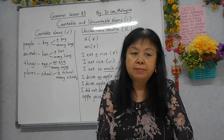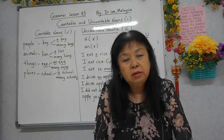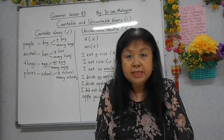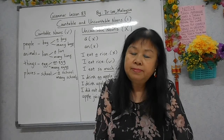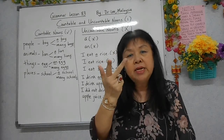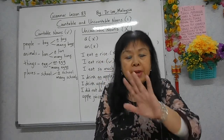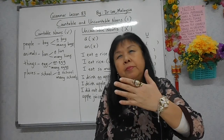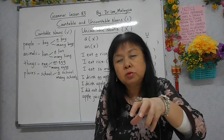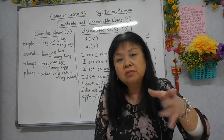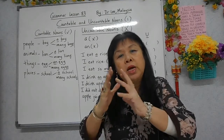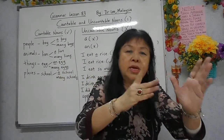Saya memilih bab ini sebab sebelum ini, saya telah mengulangkaji artikel dan pada masa itu, saya telah sebut Countable Nouns. Sebab itu, bab ini saya akan mengajar Countable Nouns dan Uncountable Nouns. Countable Nouns ialah orang, binatang, benda, atau tempat — boleh dikira. Tetapi Uncountable Nouns seperti bubur, nasi, makanan. Makanan secara am, minuman secara am. Tetapi minuman itu sendiri, katakan kopi atau teh, itu Uncountable — tak boleh kira. Bahasa Inggeris itu sangat spesifik, sangat tertentu. Boleh kira, tak boleh kira.